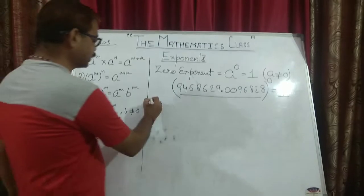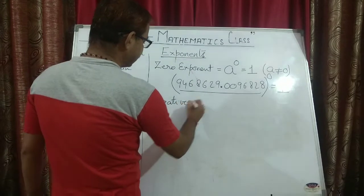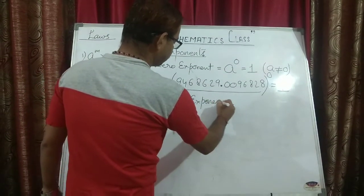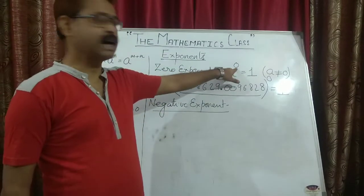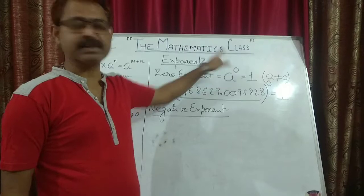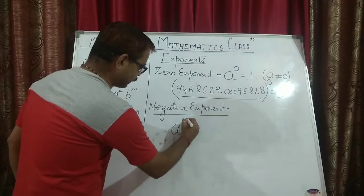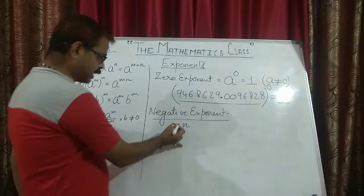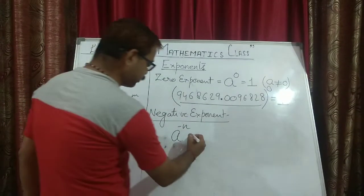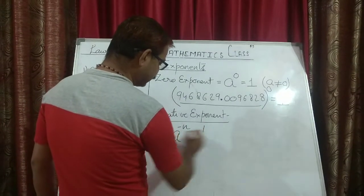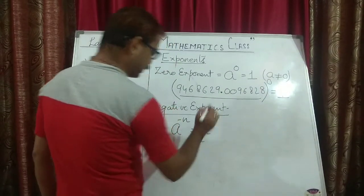The next point is negative exponent. What is the meaning of negative exponent? Again, exponent means power, and negative means it should contain a minus sign. Suppose I say a to the power n — this is a positive exponent. If I put a minus sign, it becomes a to the power minus n.